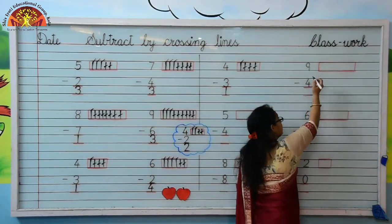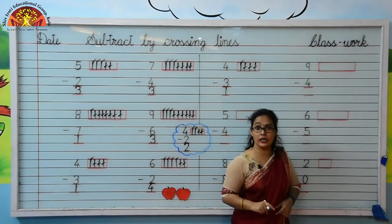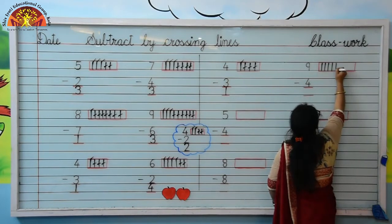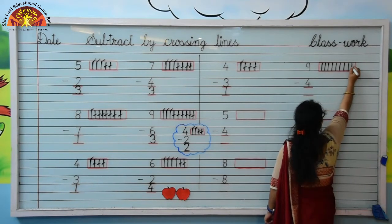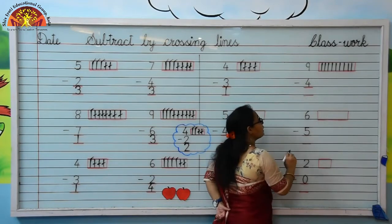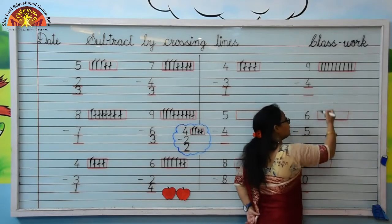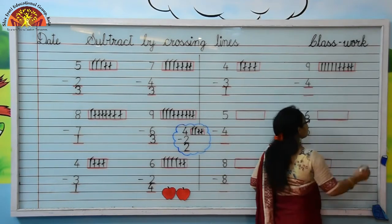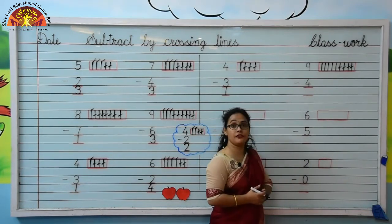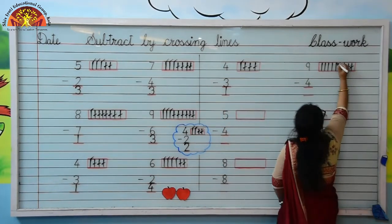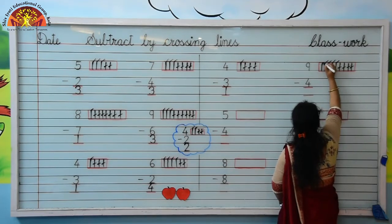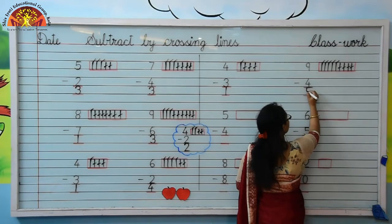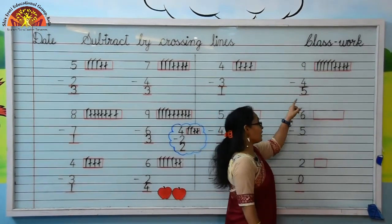Next number is 9. Kids, how many lines should I draw here? Yes, 9 lines. Let's draw with me: 1, 2, 3, 4, 5, 6, 7, 8, 9. The downside is 4. Kids, we will cross 4 lines from 9 lines. Let's cross them: 1, 2, 3, 4. Now you tell me how many lines are left. Let's count together: 1, 2, 3, 4, 5. Kids, 5 lines are left. So your answer is 5. Move to next.